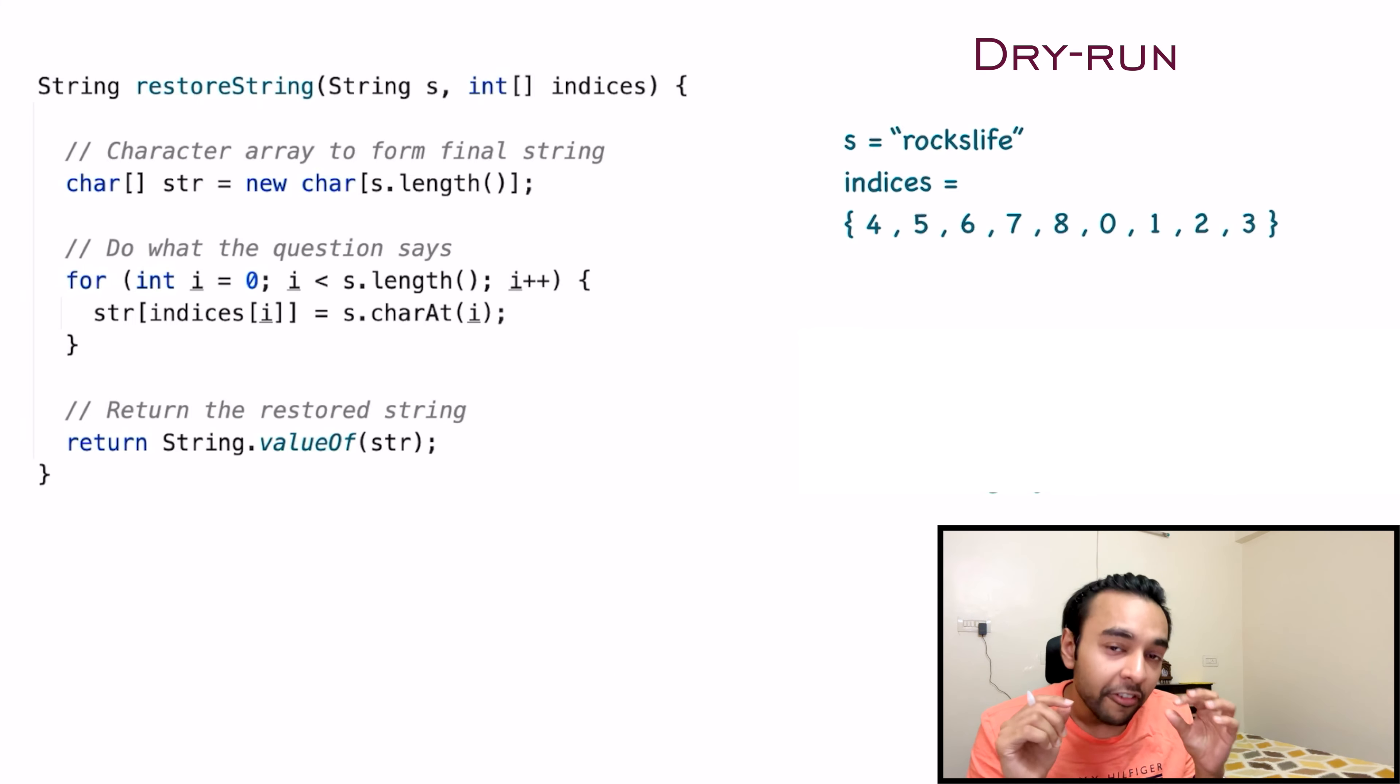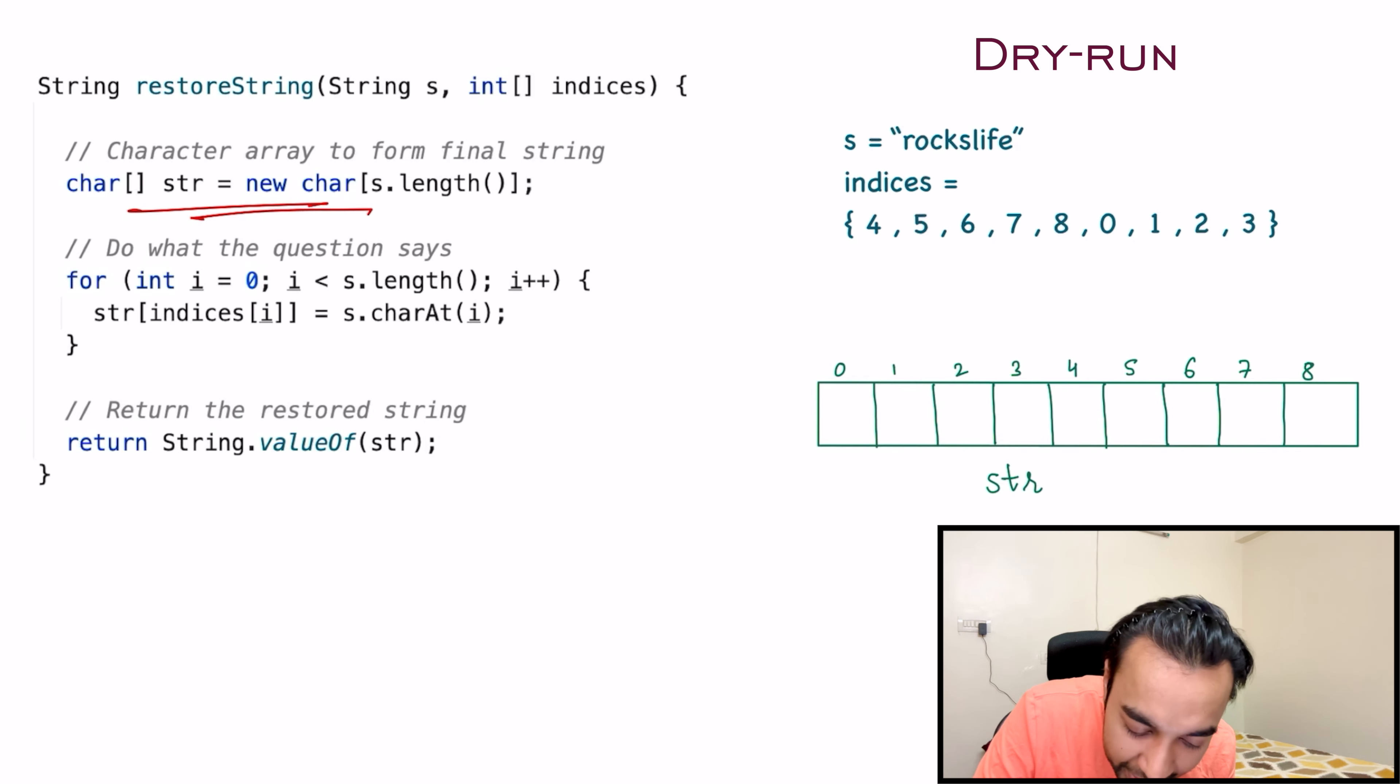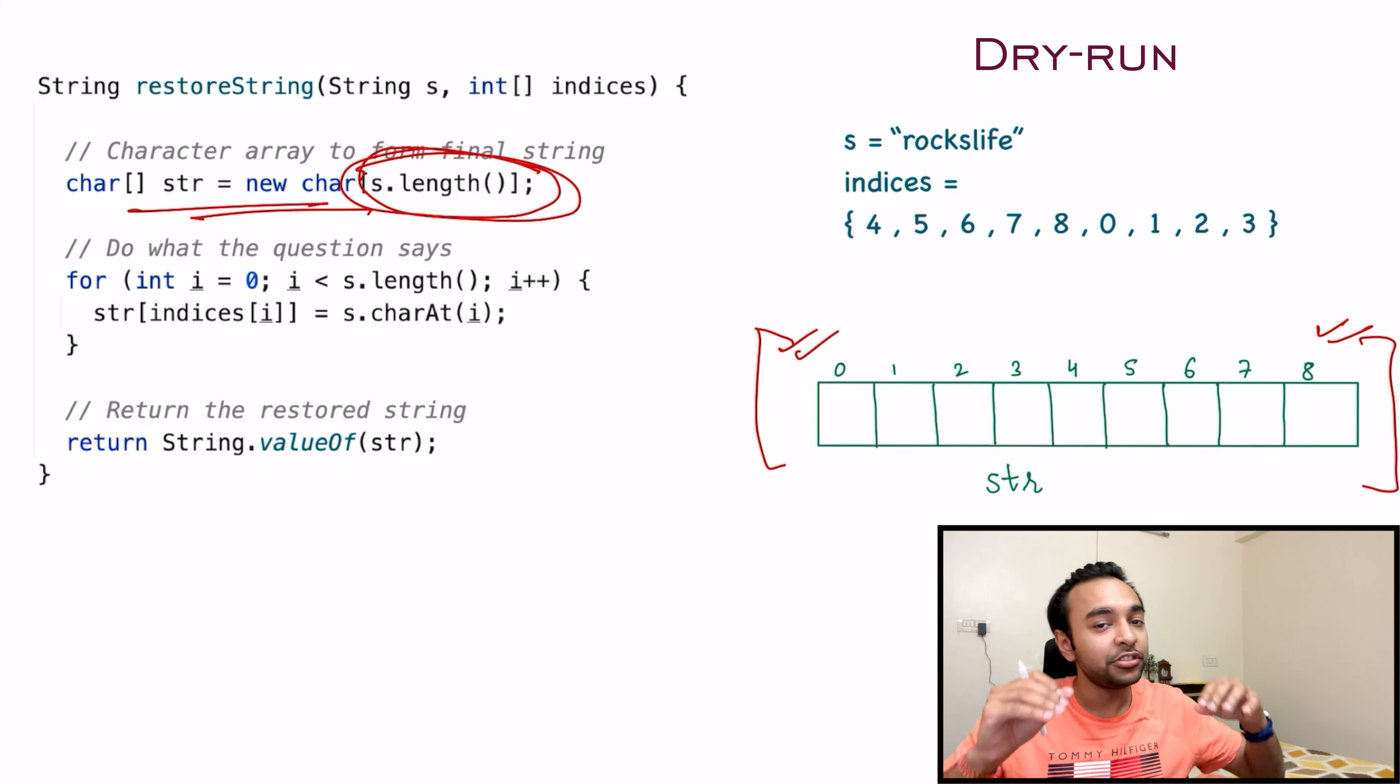Moving on with the dry run. What was the first thing that we do? First of all, we need to create a character array. And this character array will be of the same length. So I have my character array that starts at index 0 and ends at index 8. And this is ultimately going to store your answer. And how do we go about solving it?